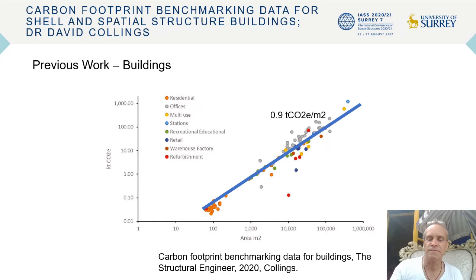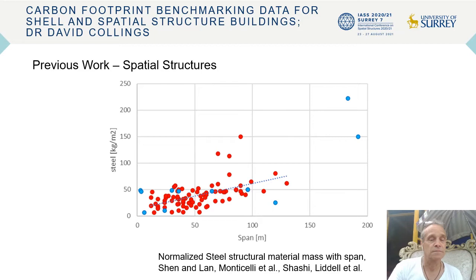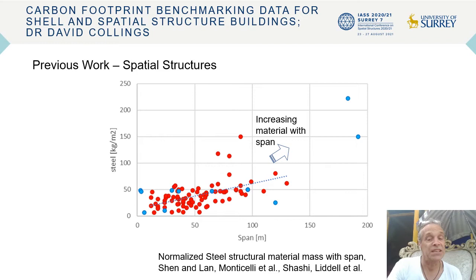Other work on spatial structures: there are quite a few papers that give weights of steel for various space structures and I've plotted them here. You can see that in general there's a trend of increasing material with span, so there's likely to be a similar trend of increasing carbon.